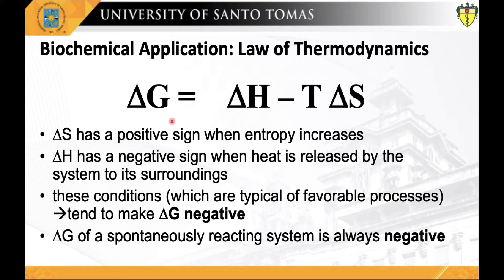Analyzing the equation, delta S, or change in entropy, has a positive sign when entropy increases, and delta H, or change in enthalpy, has a negative sign when heat is released by the system to its surroundings. Either of these conditions, typical of favorable processes, tend to make delta G negative. In fact, the delta G of a spontaneously reacting system is always negative. The units of delta G and delta H are joules per mole or calories per mole, while the units of entropy are joules per mole Kelvin. Heat as a form of energy is not useful to the cell; chemical energy in the form of ATP would be most useful.